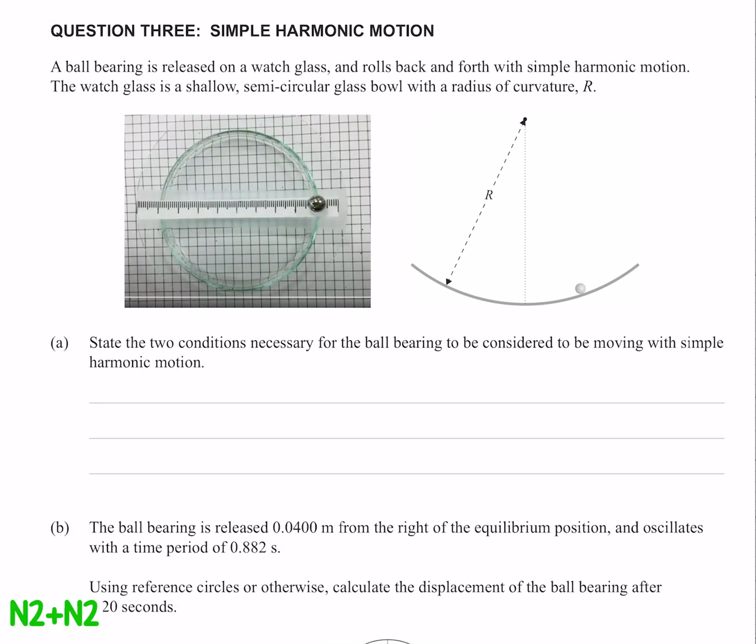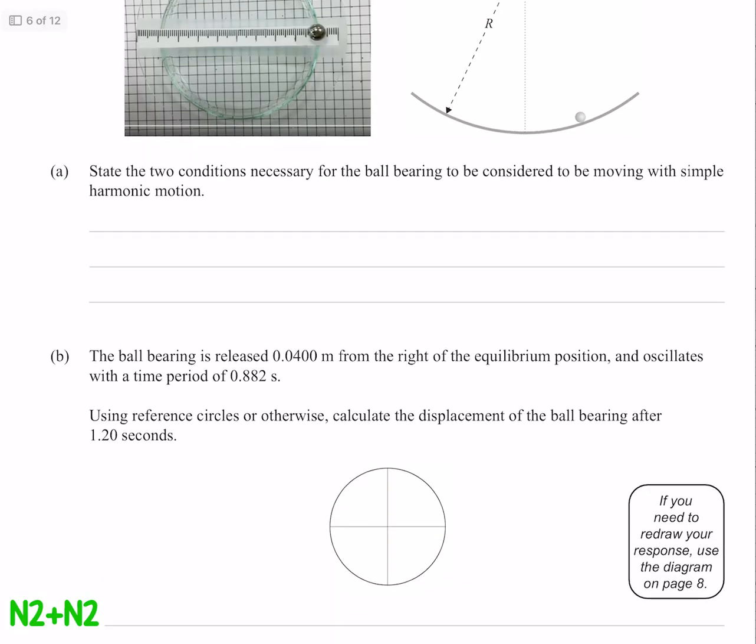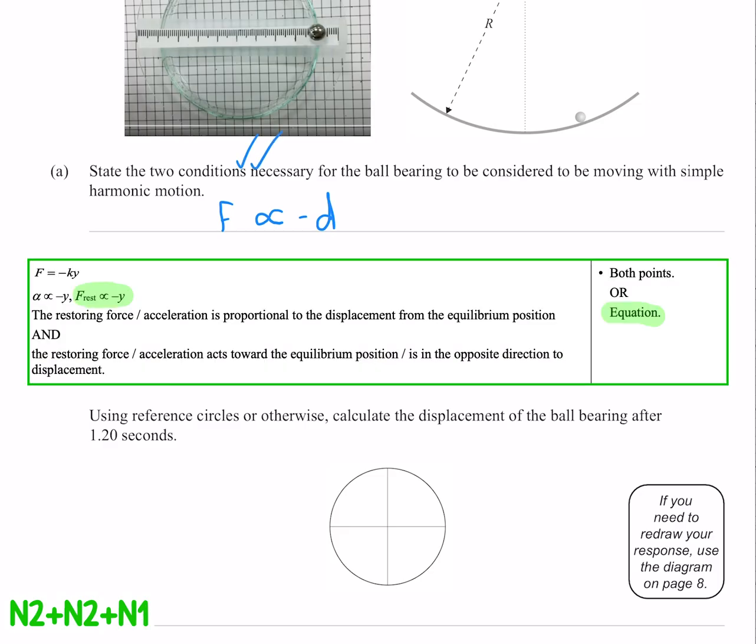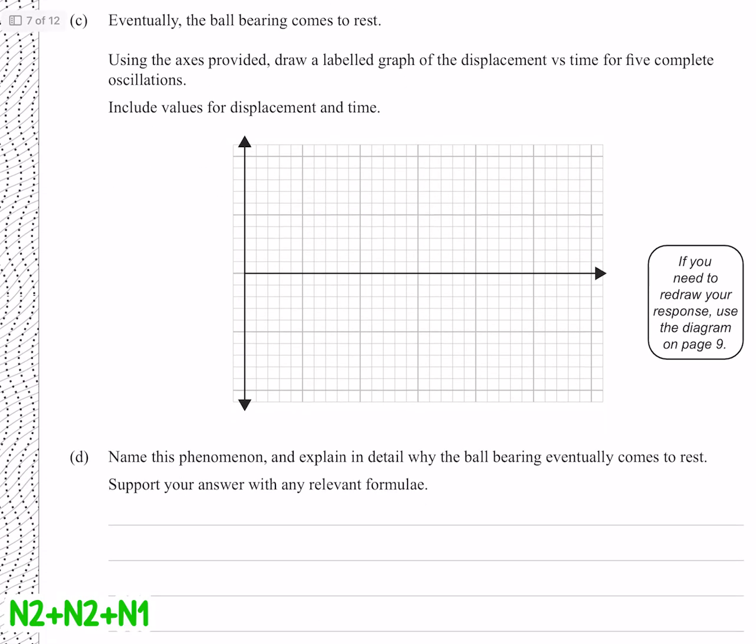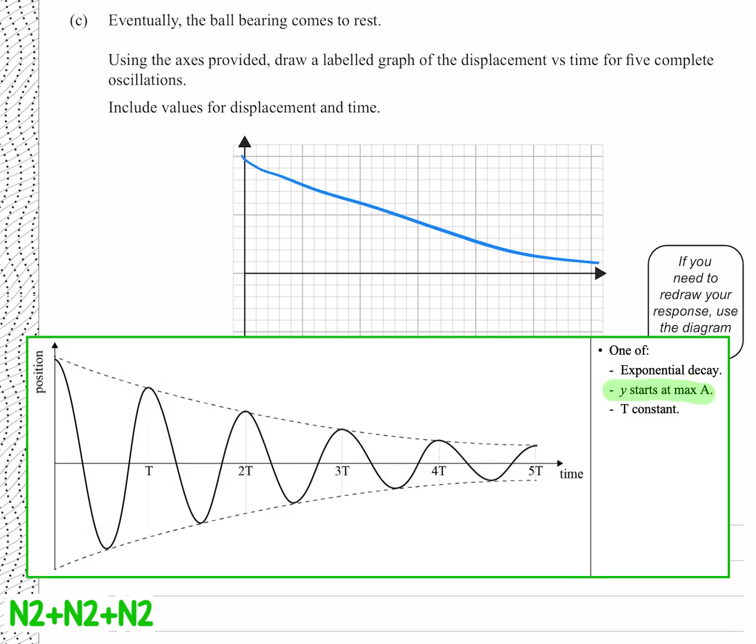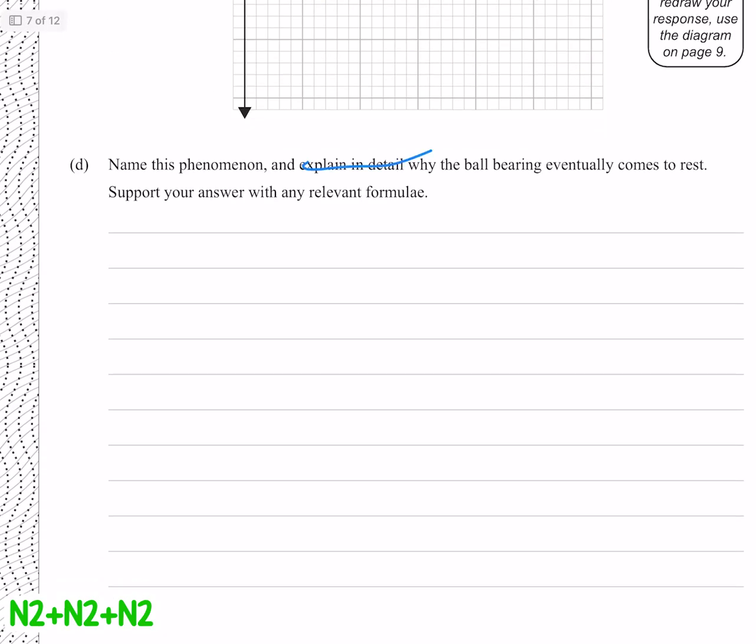Moving on to question 3. State the two conditions necessary for the ball bearing to be considered to be moving with simple harmonic motion. Well the force is proportional to negative d, our first condition is that it's proportional, and our second one is that it's opposite, negative. So that's job done. Eventually the ball bearing comes to a rest, using the axis provided, draw a labeled graph for the displacement versus time for 5 complete oscillations. And while we could do a real fancy sinusoidal, I reckon that's about good enough. Name this phenomenon - damping. That should do us for mechanics, let's move on to electricity.